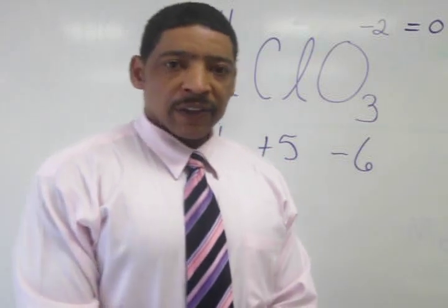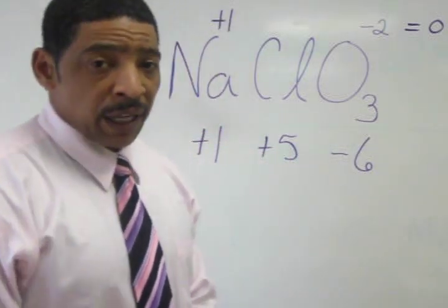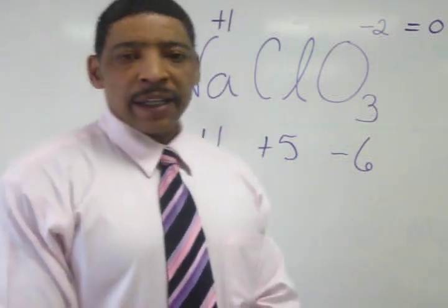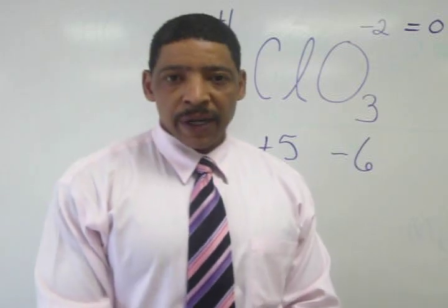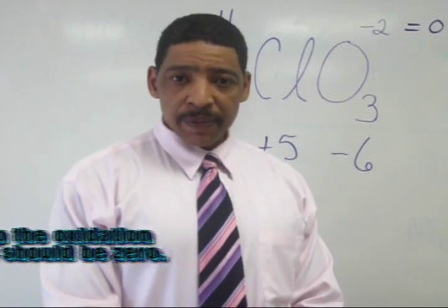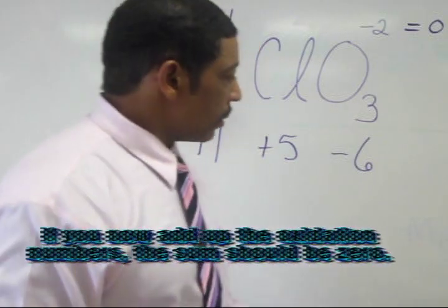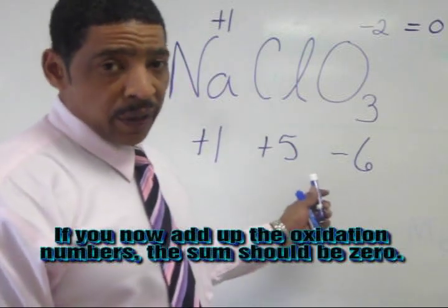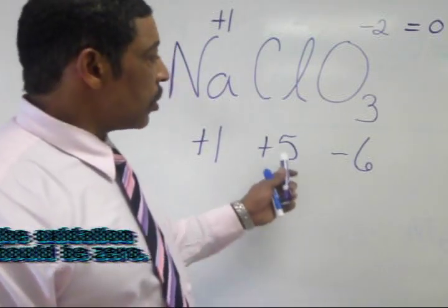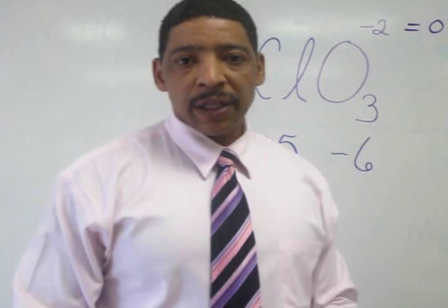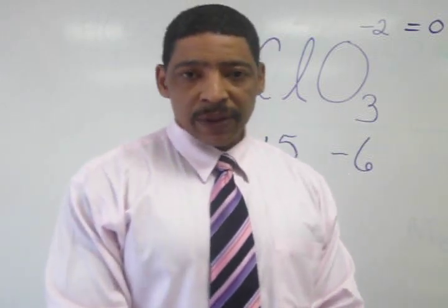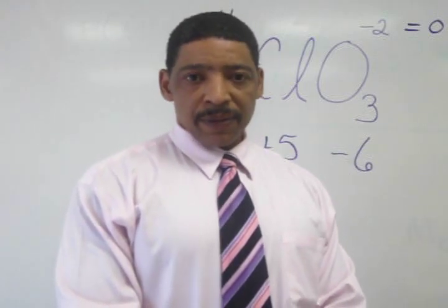These oxidation states may be confirmed by finding the elements on the periodic table. For chlorine, the plus 5 oxidation number should be confirmed on the periodic table.